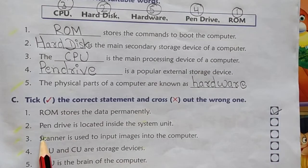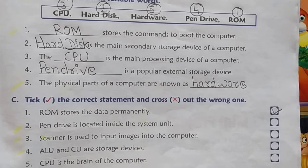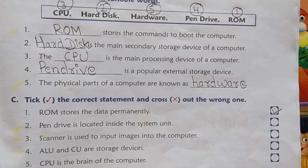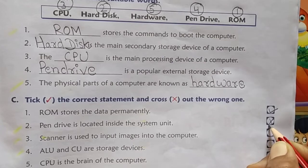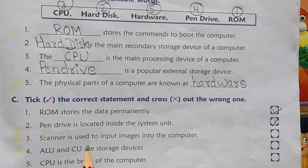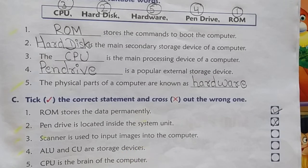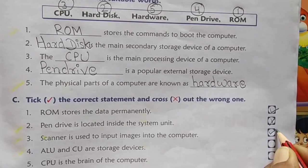Second statement: pen drive is located inside the system unit. The pen drive is an external storage device, so it is not located inside the system unit. This is wrong — you will cross it. Third statement: scanner is used to input images into the computer. A scanner is an input device used to input images into the computer. This is true — you will tick here.